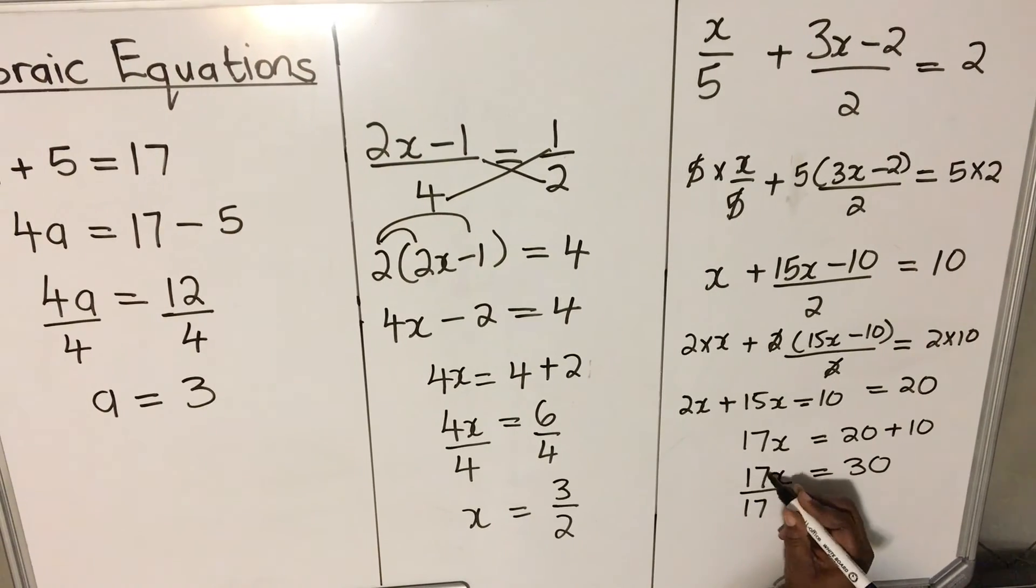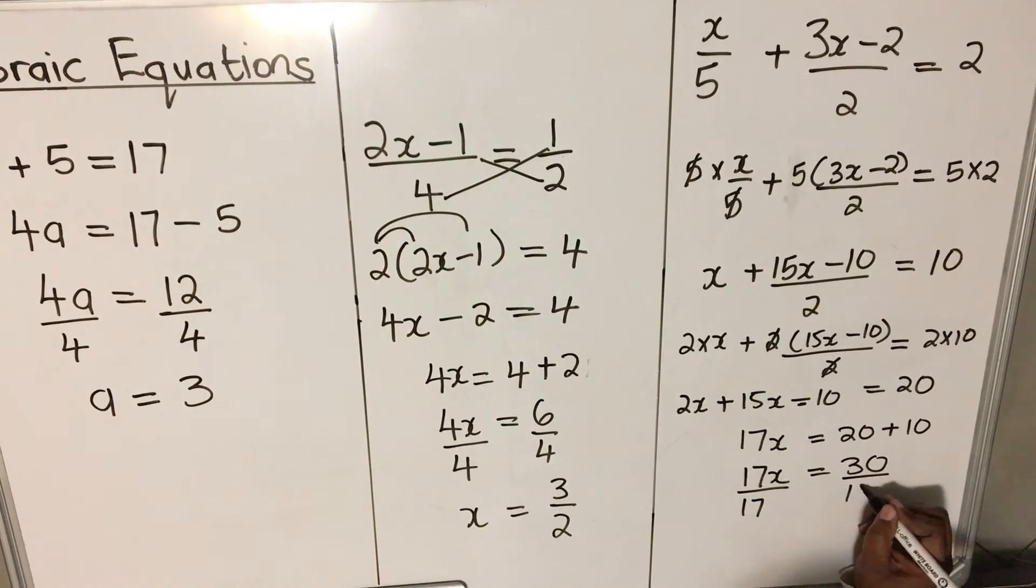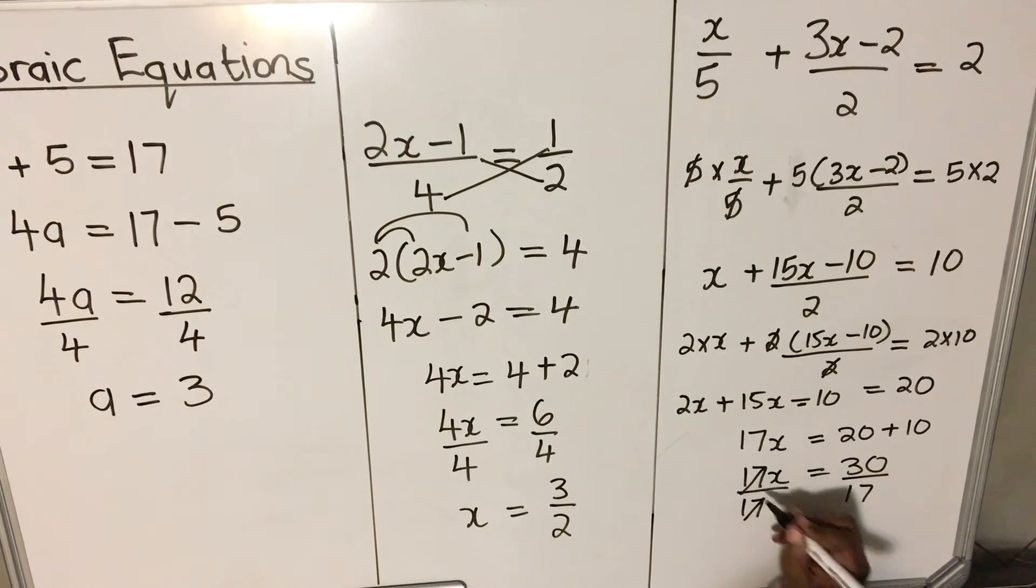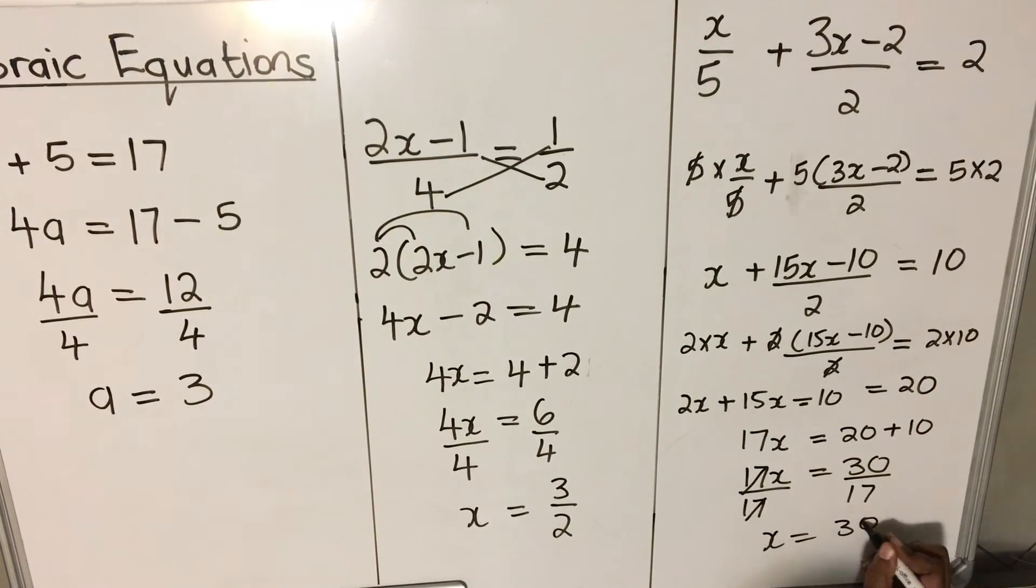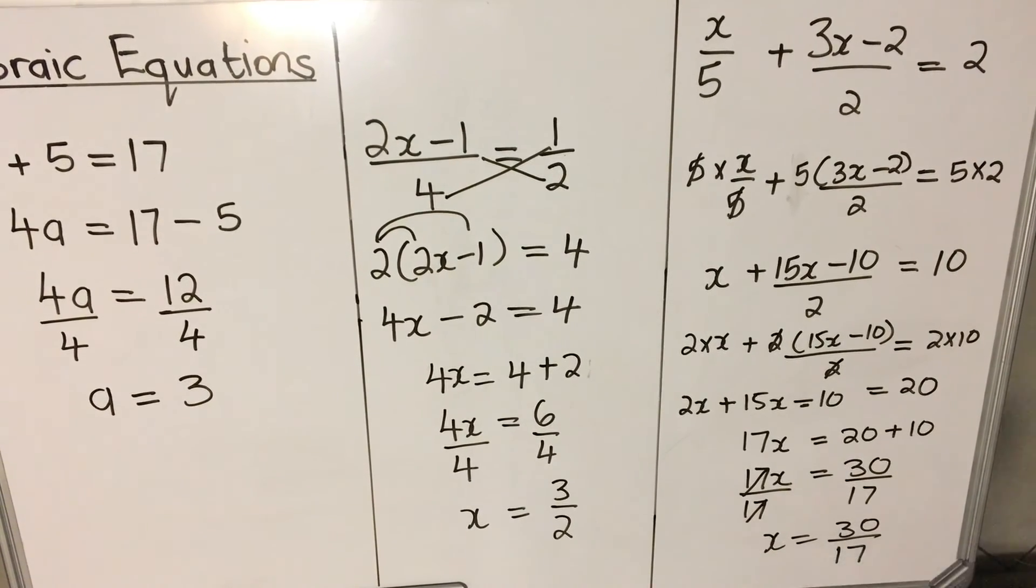Divide by 17 to get rid of the 17. Divide by 17. The 17 will cancel the 17. x is equal to 30 over 17.